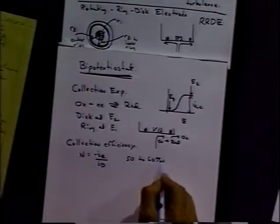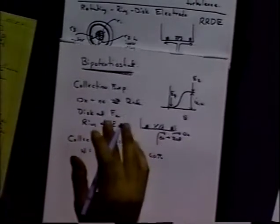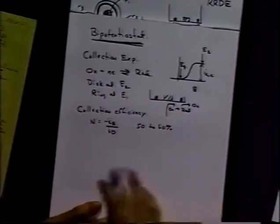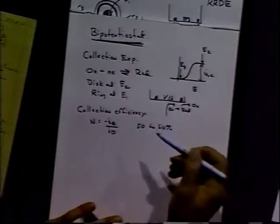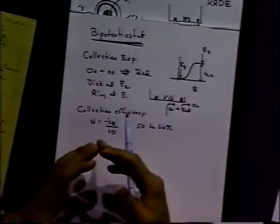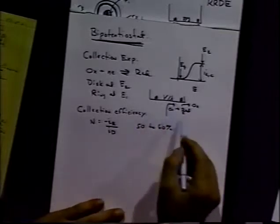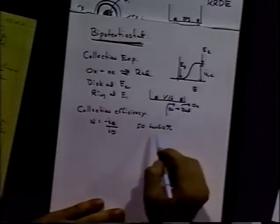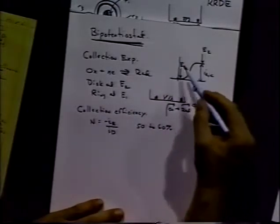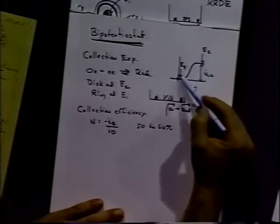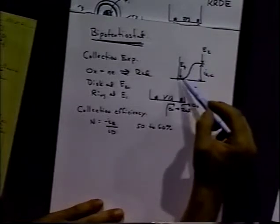Sometimes a little bit better, sometimes a little bit worse. That value should be stable for chemically stable oxidants and reductants. So as long as there is no chemical process accompanying these electron transfers, we should be able to maintain a stable collection efficiency no matter what the rotation rate is, as long as we're sitting on the plateau of the reduction process and essentially the plateau of the oxidation process.